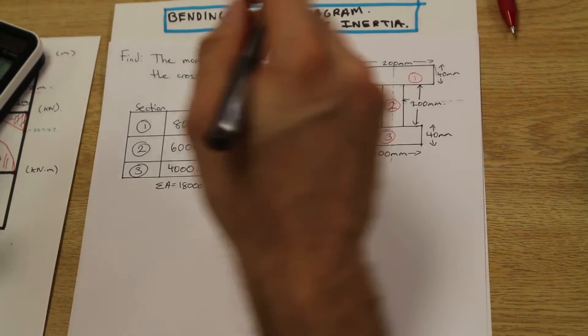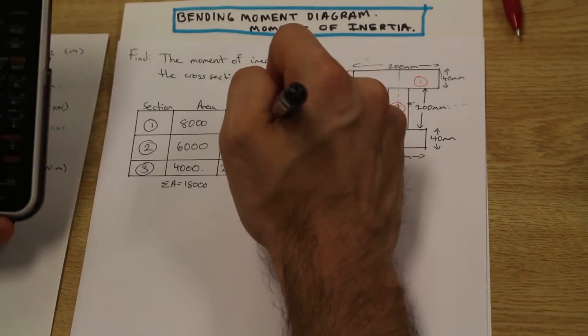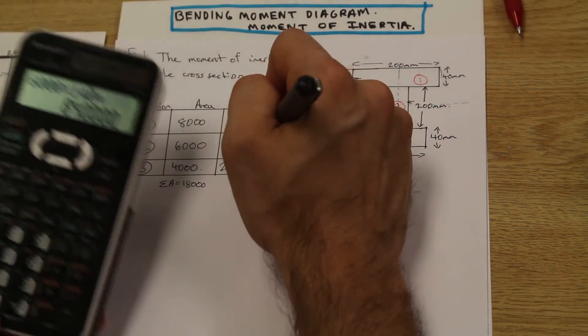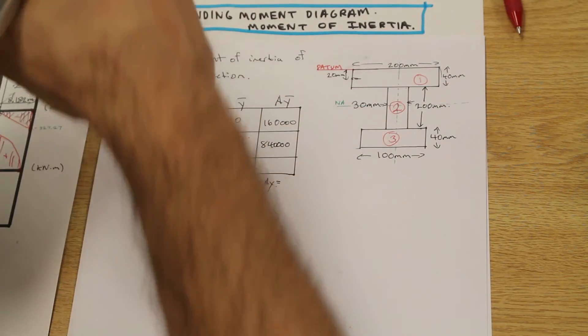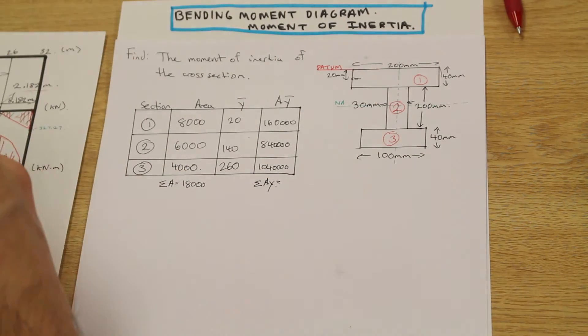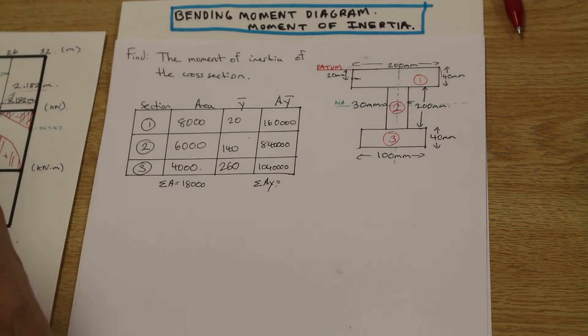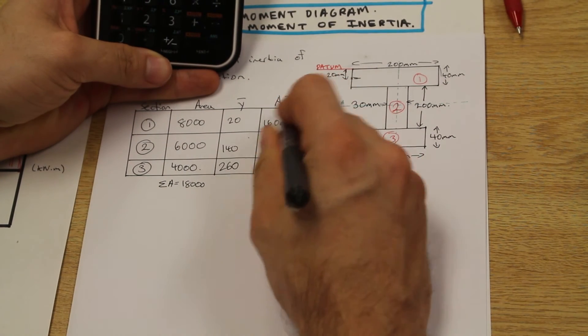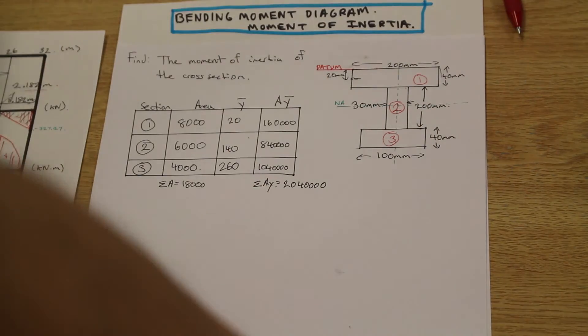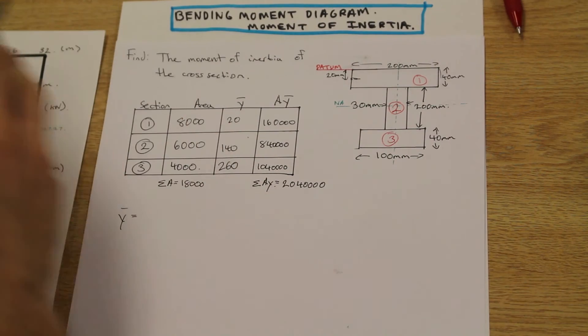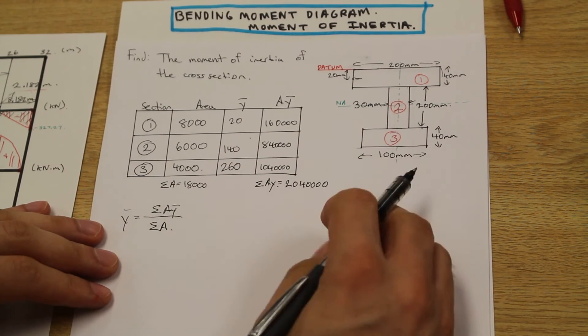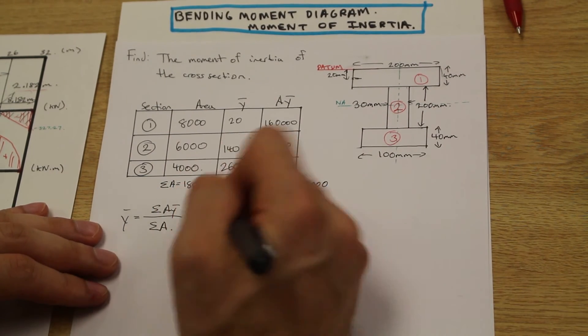And summating all of these A Y bars, we have... I mean, I guess I'll write this down for you. So Y bar is equal to the summation of A Y bar over summation of A, and that will give us Y bar.